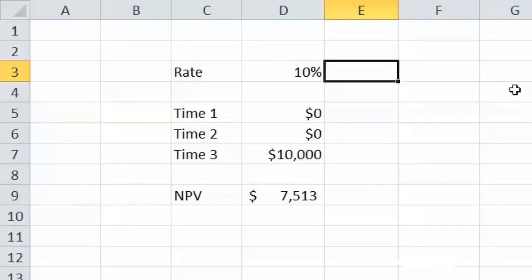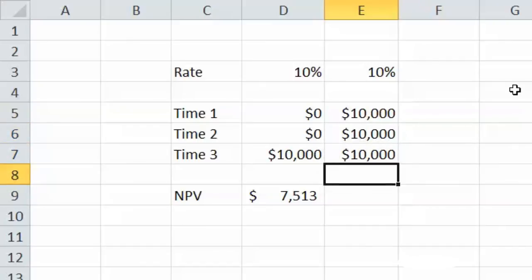To do this for the annuity, same thing, 10%, but $10,000, $10,000, $10,000, and we just drag this across to repeat the formula, and we end up with $24,869.